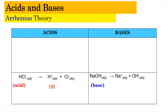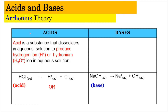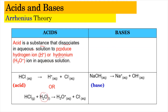According to the Arrhenius Theory, an acid is a substance that dissociates in aqueous solution to produce the hydrogen ion H⁺, or the hydronium ion H₃O⁺ in aqueous solution. For example, HCl (hydrochloric acid), when dissociated, produces H⁺ aqueous and Cl⁻ aqueous. If we include water in the equation, it results in H₃O⁺ aqueous and Cl⁻.